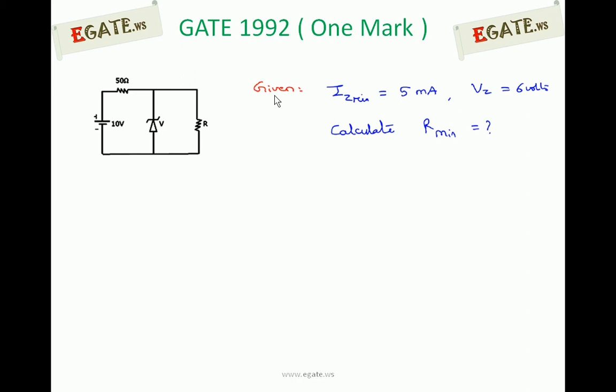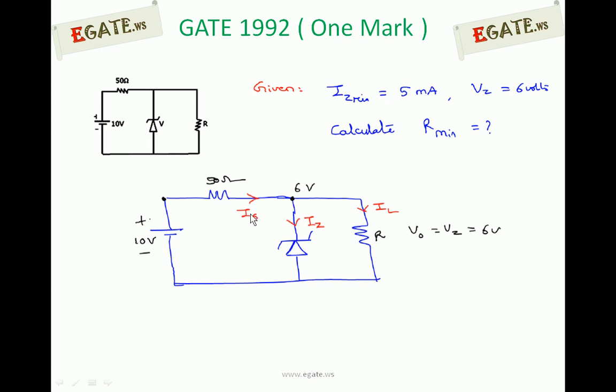We can redraw the circuit with the current directions as shown. IS is the current flowing through 50Ω resistor. This IS is dividing into two branches: IZ is the Zener current, IL is the load current. So from this, IS can be written as IZ plus IL.